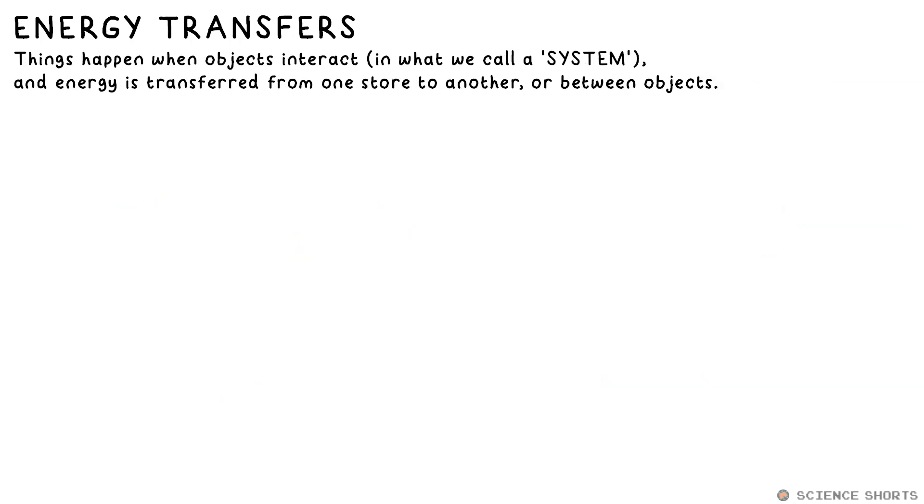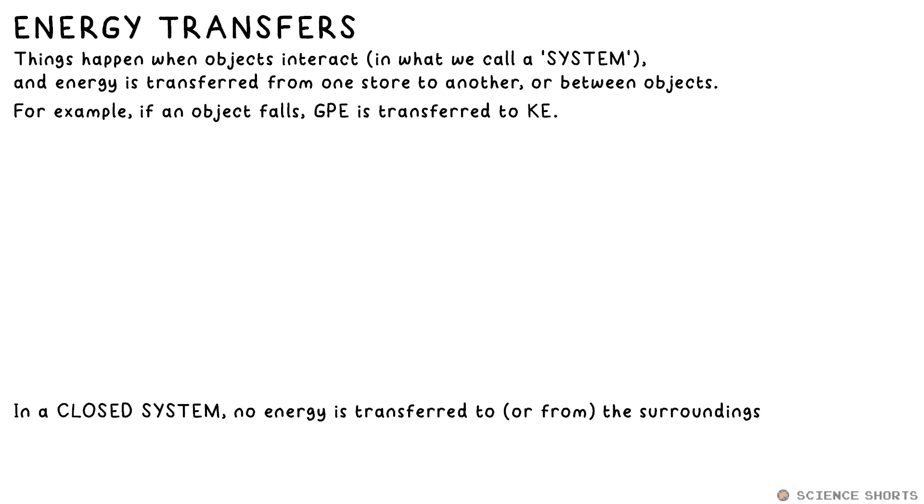In order for anything to happen in a system, energy must be transferred from one object to another, or from one store to another. In a closed system, no energy is lost to the surroundings, and no energy comes in from the surroundings either, so that means we can equate two lots of energy. This just means that we can say one lot of energy is equal another.